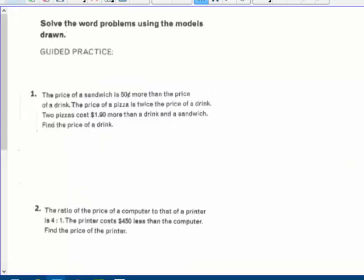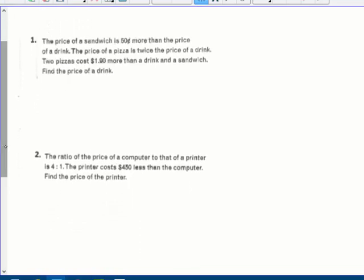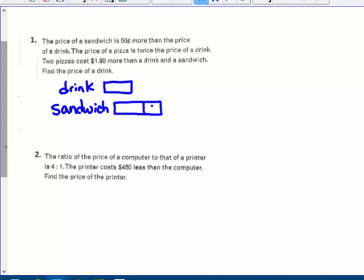So some practice that I'm going to guide you through. The price of a sandwich is 50 cents more than the price of a drink. So a drink, I'm just going to represent as a box. Here's my drink. I've got to label everything. The drink plus the sandwich. So this part here is that 50 cents. The price of a pizza is twice the price of a drink. So if we draw two of these bars that represent the drink, that's the pizza. Two drinks.